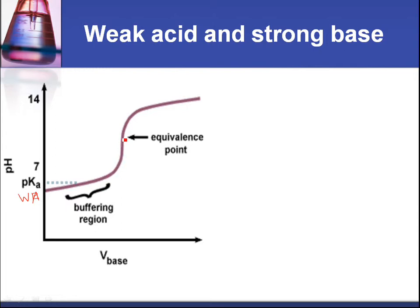Now, the equivalence point is obviously not pH seven anymore. And we'll have a look at why it's not pH seven later. Now, the important point to note here is we have this called the buffer region. In the buffer region, what's happening is the solution is resisting a change in pH. If you remember the definition of a buffer system.